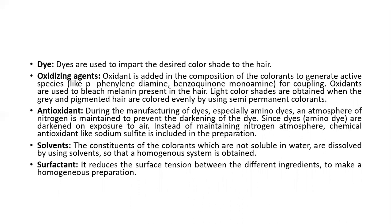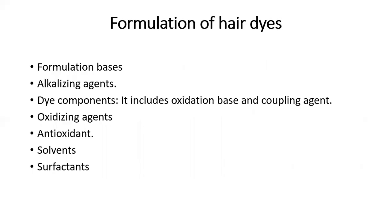For amino dyes, an atmosphere of nitrogen is maintained to prevent darkening, since amino dyes darken on exposure to air. Chemical antioxidants like sodium sulfite are included in the preparation as an alternative to maintaining a nitrogen atmosphere. Solvents are used so that ingredients not soluble in water are dissolved to obtain a homogeneous system. Surfactants reduce surface tension between different ingredients to make a homogeneous preparation, ensuring that when diluted with water it spreads uniformly.